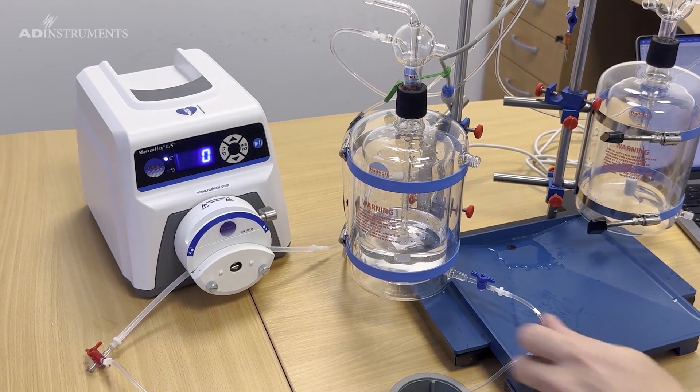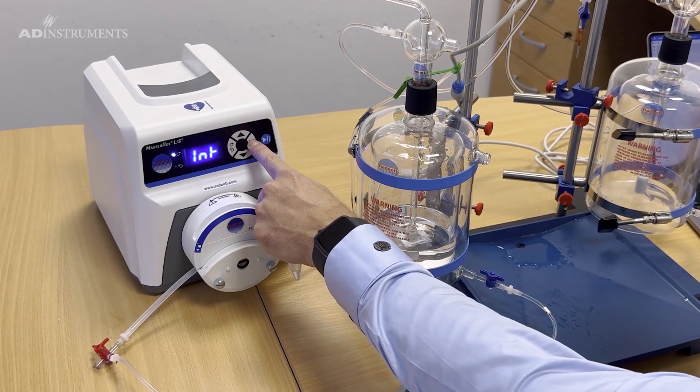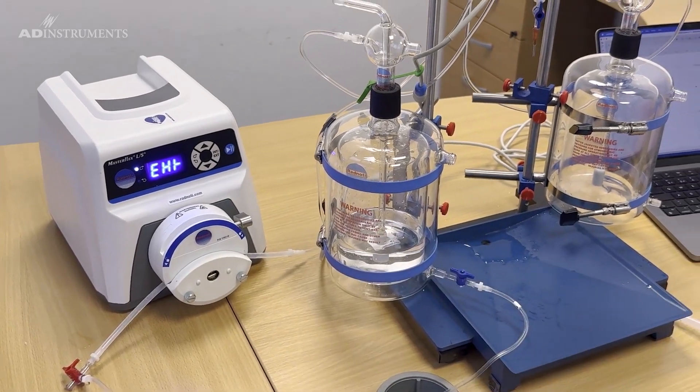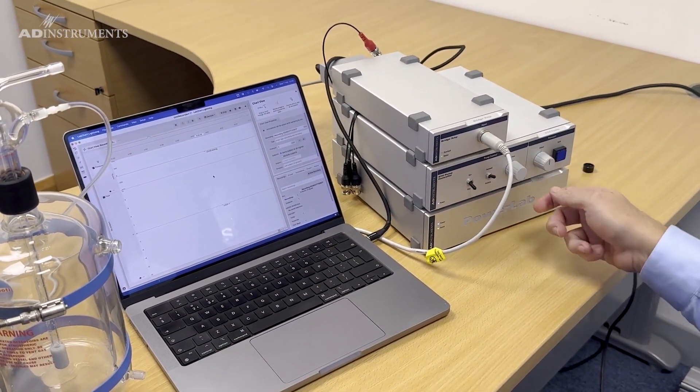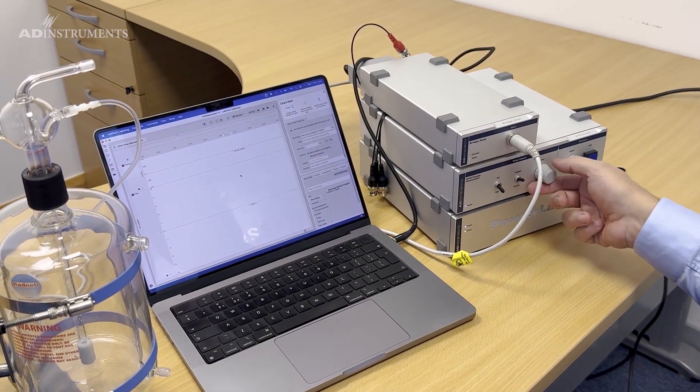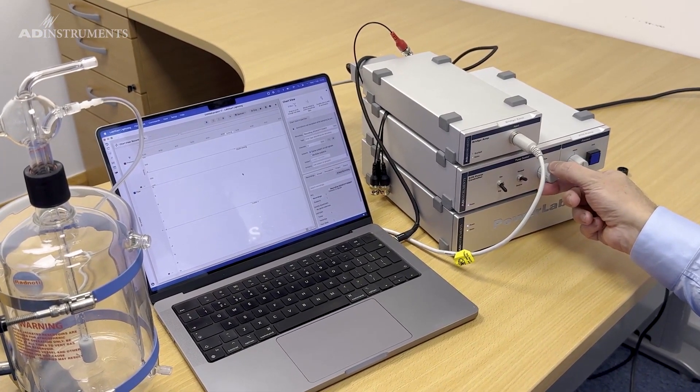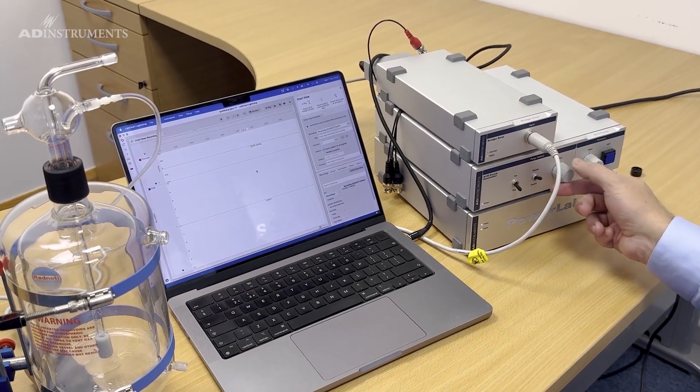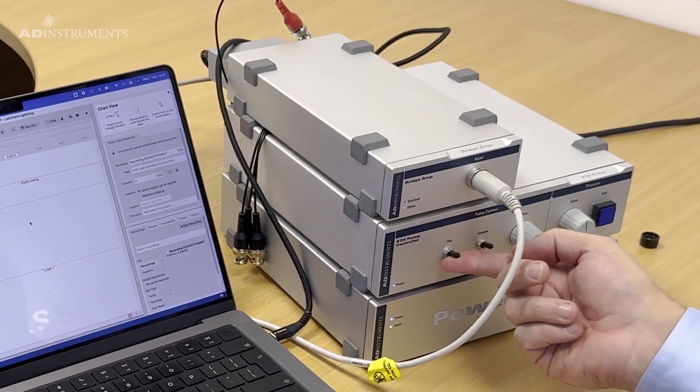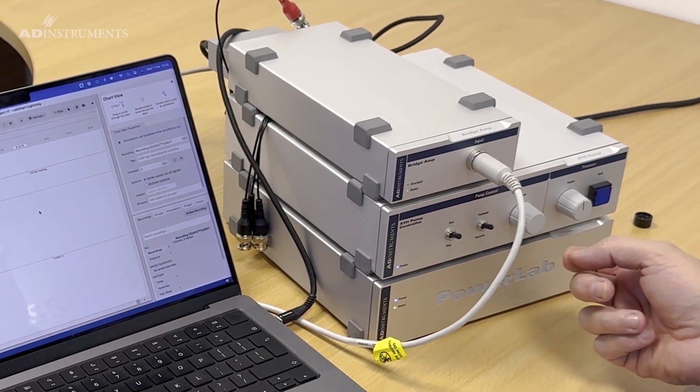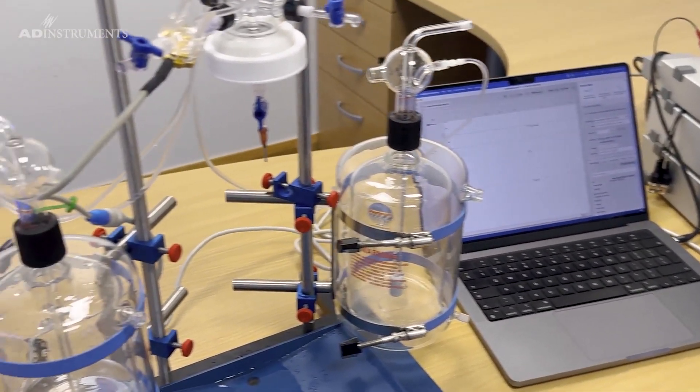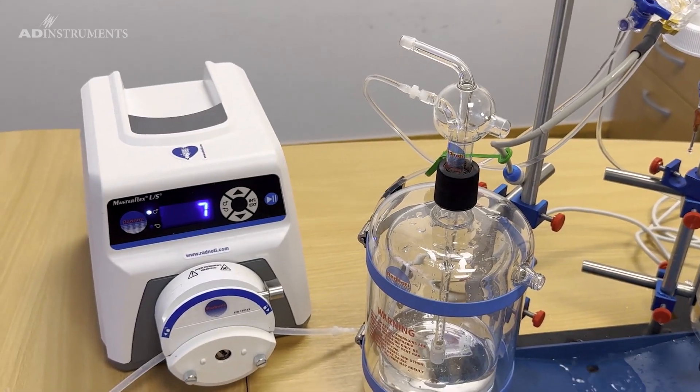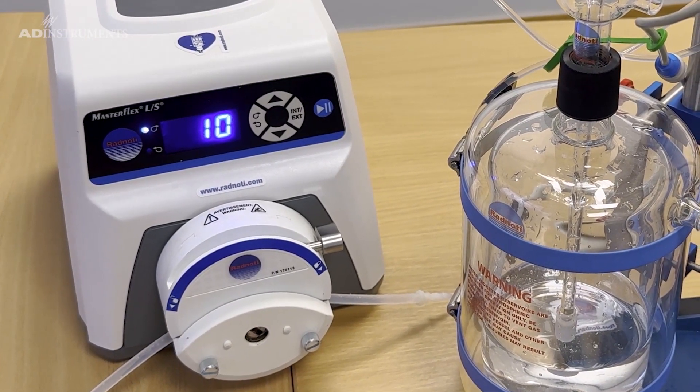To calibrate for flow, first I'll set the pump to external so it can be controlled by the STH pump controller. Next I set the flow all the way to zero by turning this knob all the way counterclockwise, and then hit run. So now the pump is on zero, it's not running at all. Then I can set the pump speed to, for example in our case, 10 rpm.